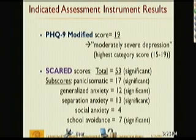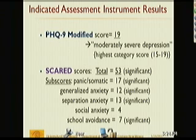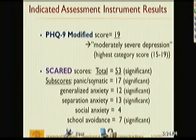A positive response to either of the two anxiety screening items — one for the psychological correlates of anxiety, the other for the somatic correlates — would indicate beginning the assessment using the SCARED. Here's what we find by doing those indicated assessments. On the PHQ-9, Spivey scored a 19, which according to the point scale is at the very highest part of the moderately severe depression category — just a point below severe depression. On the SCARED, the total score is significant for anxiety, with most subscales showing significance in realms of panic and somatic symptoms, generalized anxiety, separation anxiety, and school avoidance.